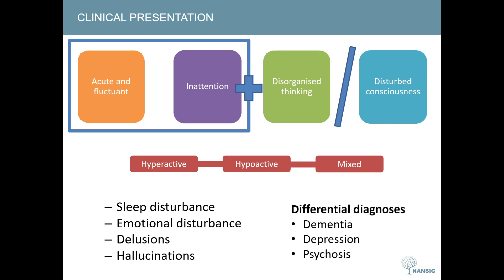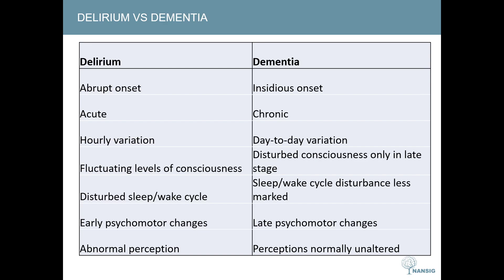There are several differential diagnoses for delirium. The main one is dementia, and we also have depression and psychosis. It's important to compare delirium with dementia. Delirium is abrupt in onset and acute in course, whereas dementia is more insidious and chronic. Delirium displays hourly fluctuation, whereas dementia varies more on a day-to-day basis. Altered consciousness is a key early feature of delirium but only appears late in dementia. Delirium has prominent sleep-wake cycle changes, and psychomotor changes and abnormal perceptions appear early, whereas in dementia these are less common and appear only late.